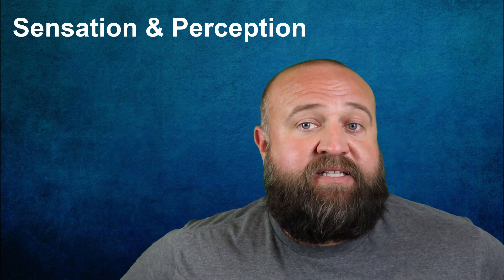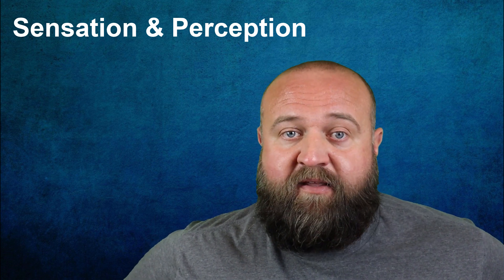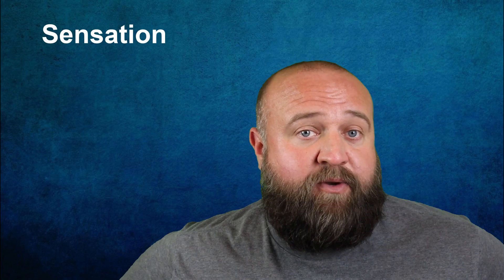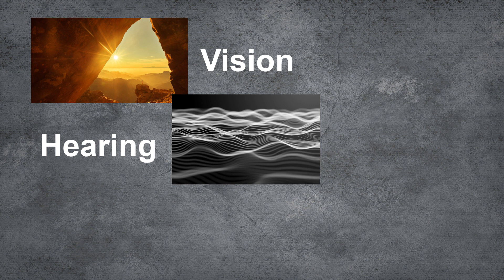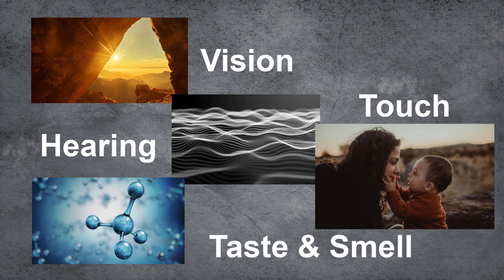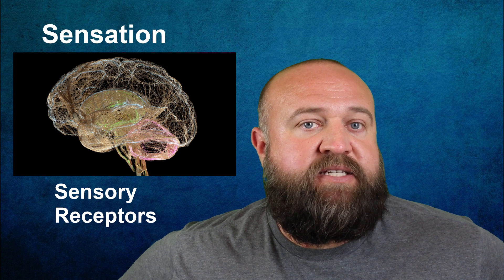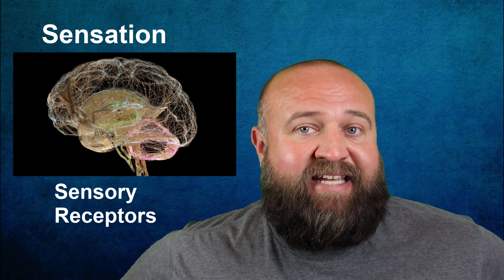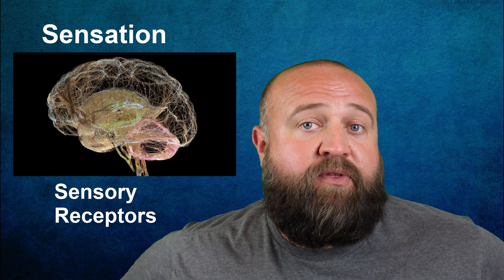Let's start by talking about the difference between sensation and perception. Sensation is what happens when sensory information is detected by a sensory receptor somewhere in our bodies. That sensory information can be in the form of light waves entering our eyes to make vision possible, sound waves entering our ears to make hearing possible, chemicals that interact with our nose and taste buds to make smell and taste possible, or pressure on the surface of our bodies that allows us to have the sensation of touch. Regardless of the sense, there are special nervous system cells known as sensory receptors that take that information to the brain where the signal is processed.